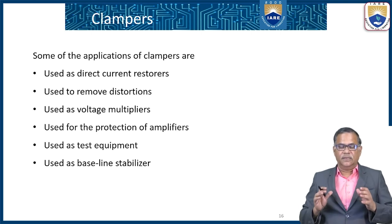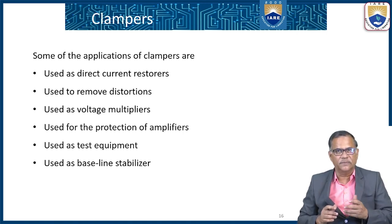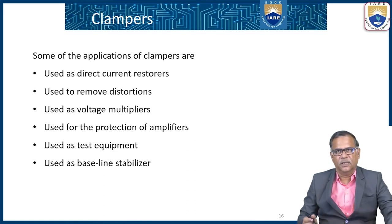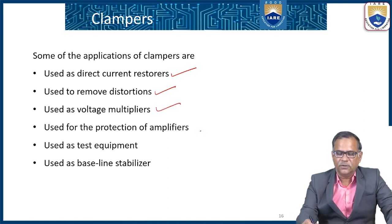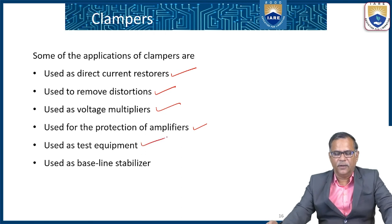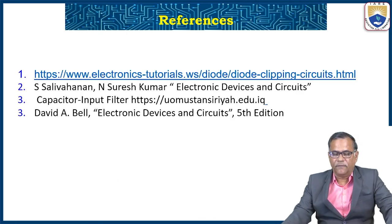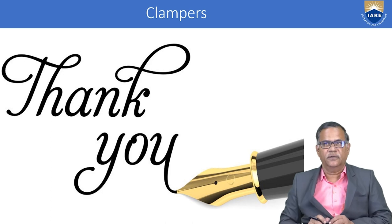Some applications of clampers include their use as direct current restorers, to remove distortions, as voltage multipliers, for protection of amplifiers, in test equipment, and as baseline stabilizers. These are the references from which the material for this presentation was taken. With this I conclude this session on clampers. Thank you.